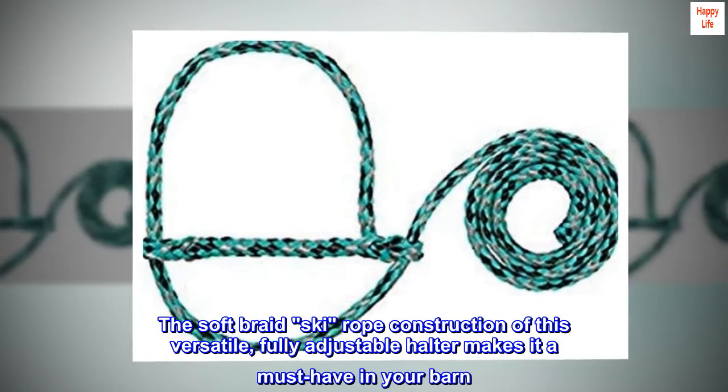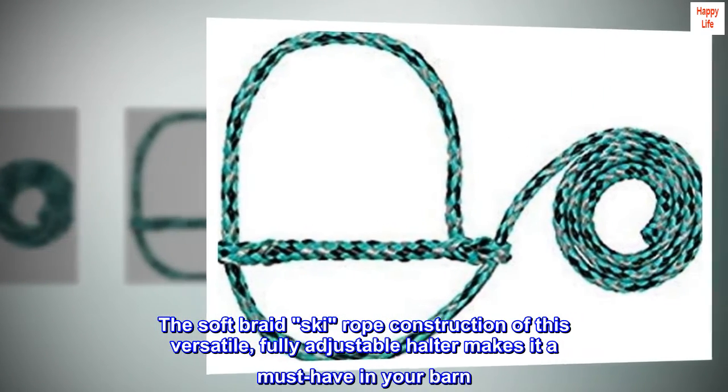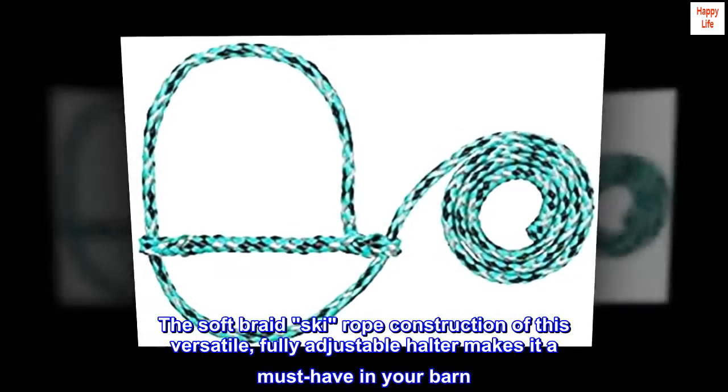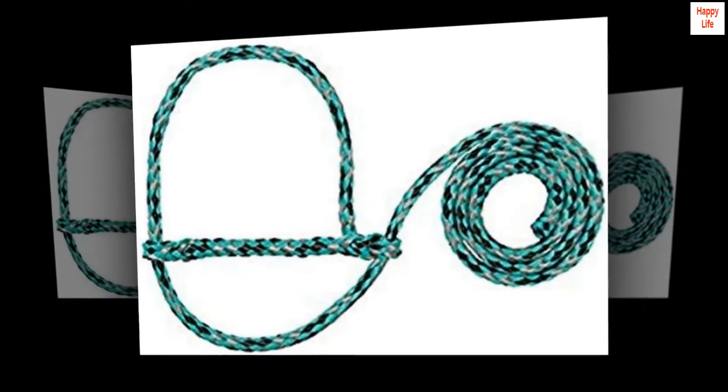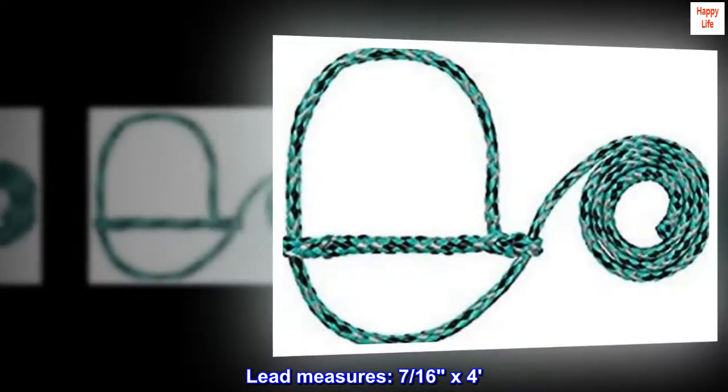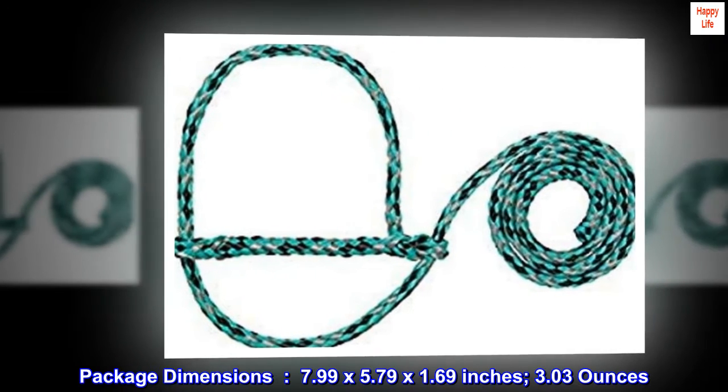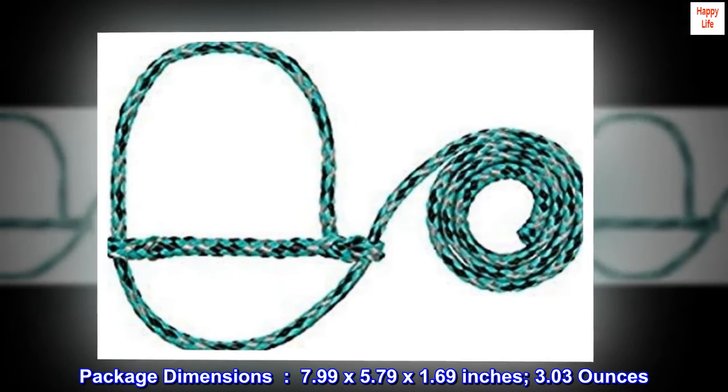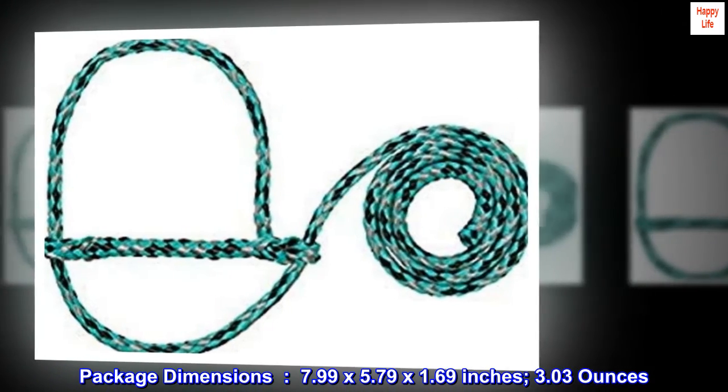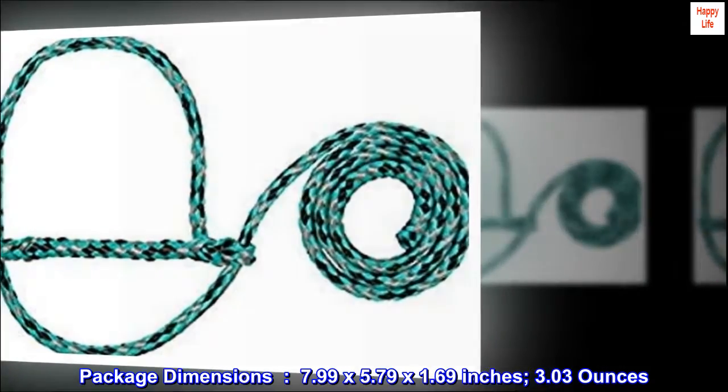The soft braid ski rope construction of this versatile, fully adjustable halter makes it a must-have in your barn. Lead measures 7/16 inch by 4 feet. Package dimensions: 7.99 by 5.79 by 1.69 inches, 3.03 ounces.